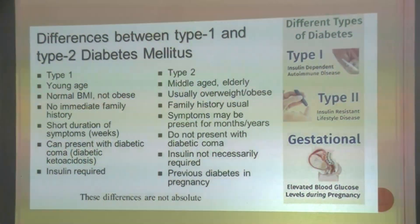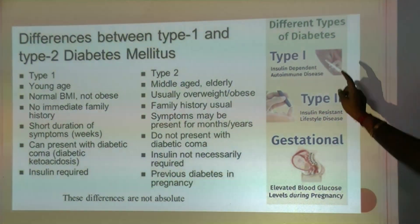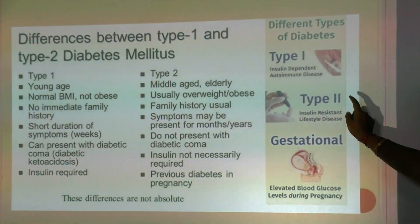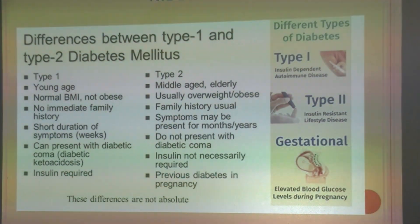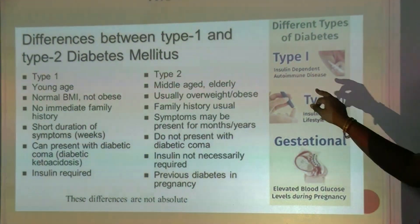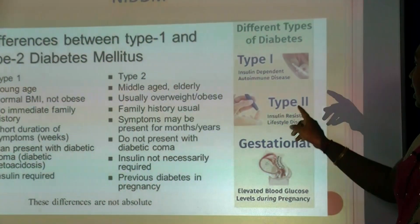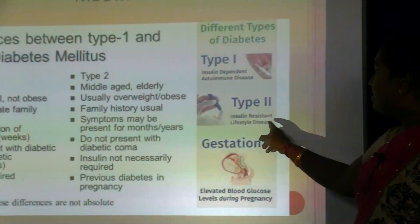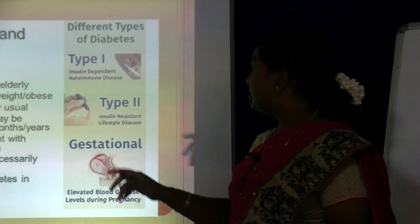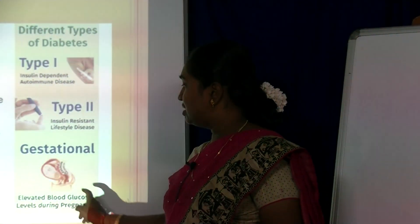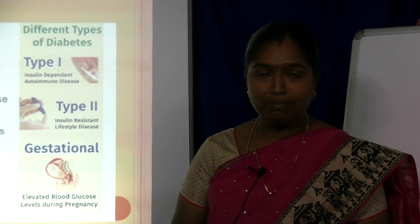There are different types of diabetes mellitus: Type 1, Type 2 and gestational diabetes. Type 1 is an insulin-dependent or autoimmune disease. Type 2 is insulin-resistant and a lifestyle disease. Gestational diabetes is elevated blood sugar seen during pregnancy.